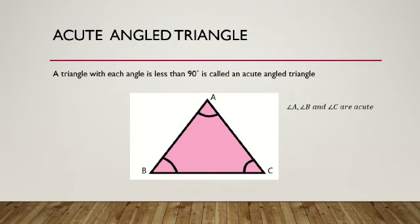Acute angle triangle — a triangle in which each angle is less than 90 degrees is called an acute angled triangle. In triangle ABC, angle A, angle B and angle C are all acute. That's why triangle ABC is called an acute angled triangle.